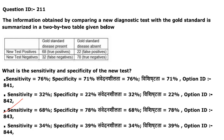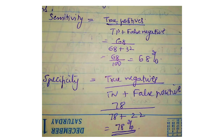Next: information from comparing a new diagnostic test with the gold standard is summarized in a 2×2 table. Sensitivity is calculated as true positives divided by (true positives plus false negatives) — giving 68%. Specificity is calculated as true negatives divided by (true negatives plus false positives) — giving 78%. So sensitivity is 68% and specificity is 78%.